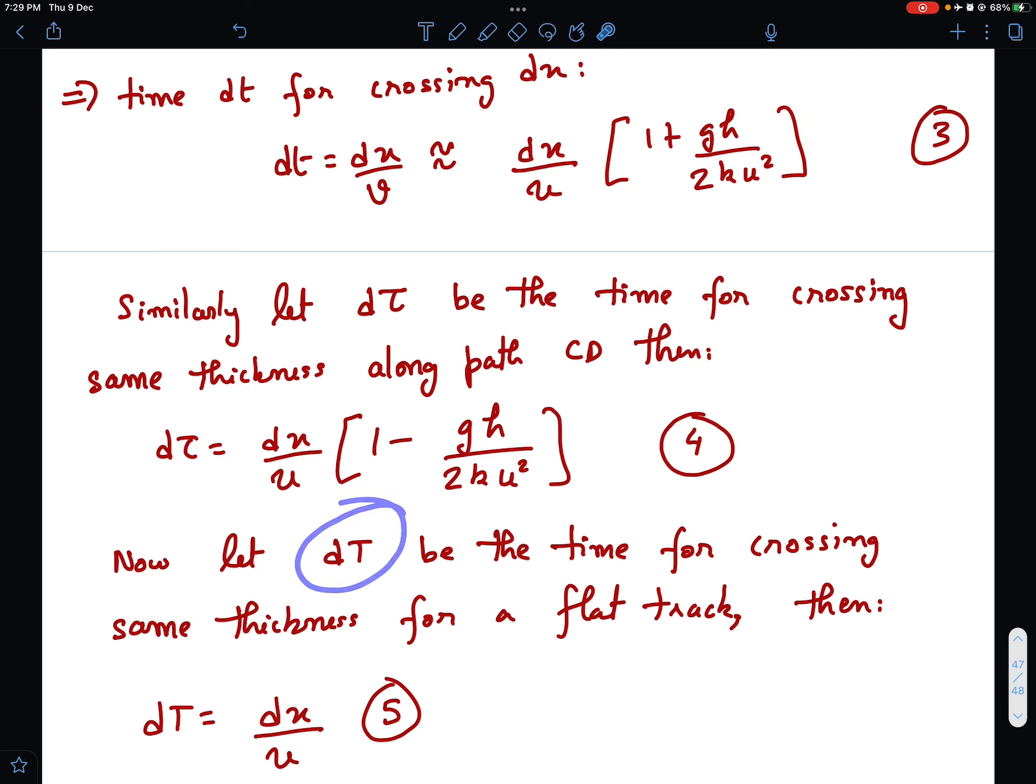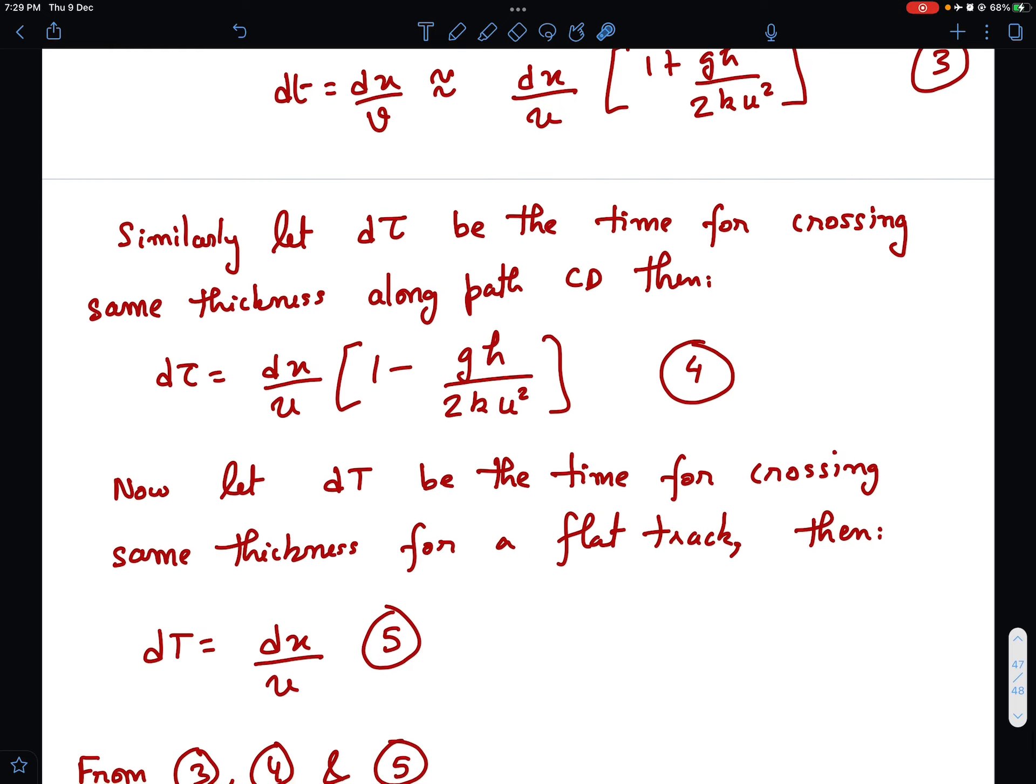And if it were a straight path, let d capital T be the time for crossing the same thickness for a flat track. So on a flat track, speed is not going to change. So dT will be simply dx/u.